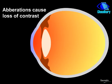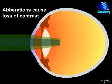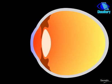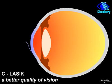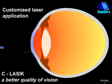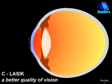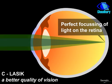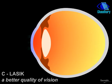Many eyes have small optical imperfections which cause loss of sharpness of vision. In C LASIK, these optical imperfections are corrected along with the spectacle power of the eye, resulting in an improved quality of vision. This treatment is tailor-made or customized for each eye.